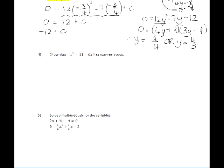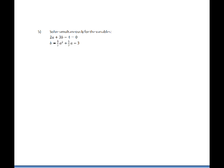And finally, we're going to look at the simultaneous equation, question 5. 2a plus 3b minus 4 is equal to 0. Let's call that equation 1. And then b is equal to a half a squared plus a half a minus 3. You are already given the value of b in this equation, so there's no rearranging to do. We can simply start off by substituting equation 2 into equation 1.